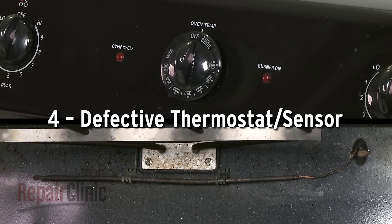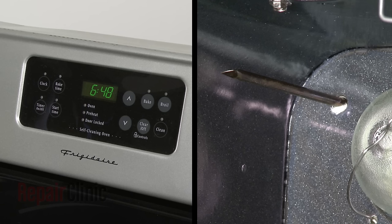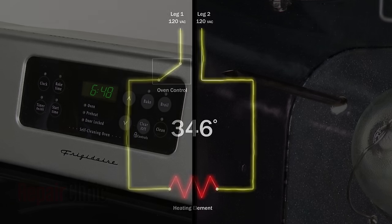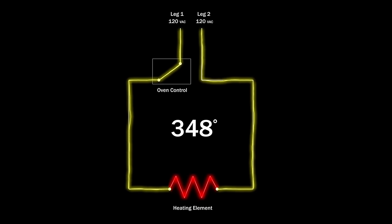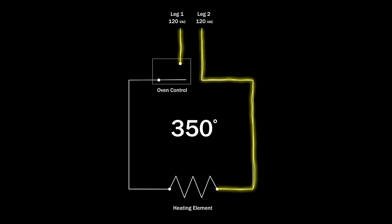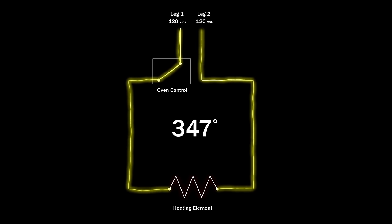Depending on your model, the oven control may be switch-based with a thermostat and sensing bulb assembly or an electronic control board that works with an oven sensor. The thermostat or sensor monitors the oven temperature. When the selected temperature is reached, the oven control shuts off the voltage to the element. This cycle repeats throughout the cooking process to maintain the proper temperature.